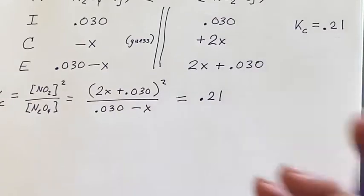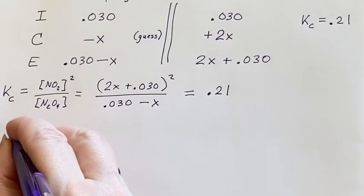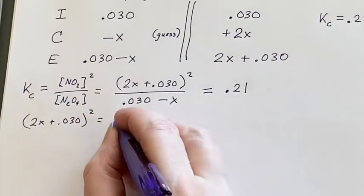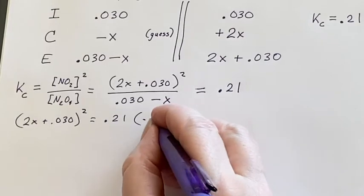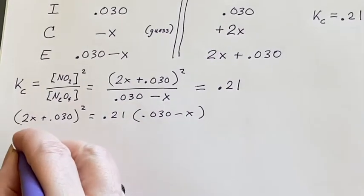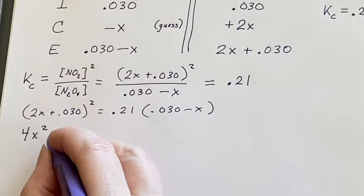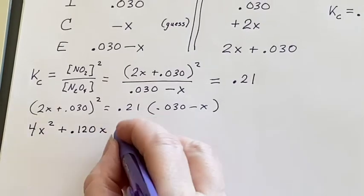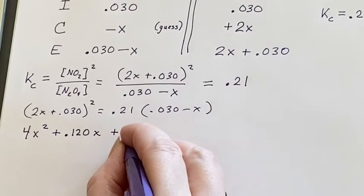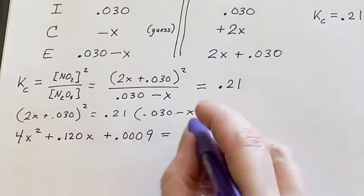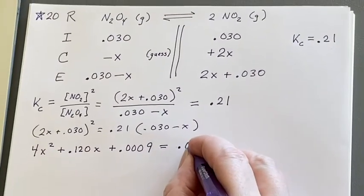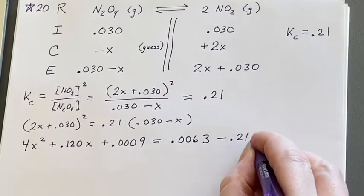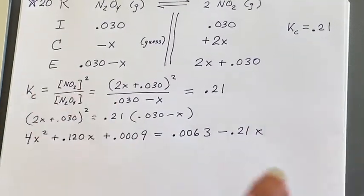That would be 2x plus 0.030 squared equals 0.21 times 0.030 minus x. 4x squared because we have to FOIL all this stuff plus 0.120x plus 0.0009 equals 0.0063 minus 0.21x. Now I got to combine like terms and all that stuff.